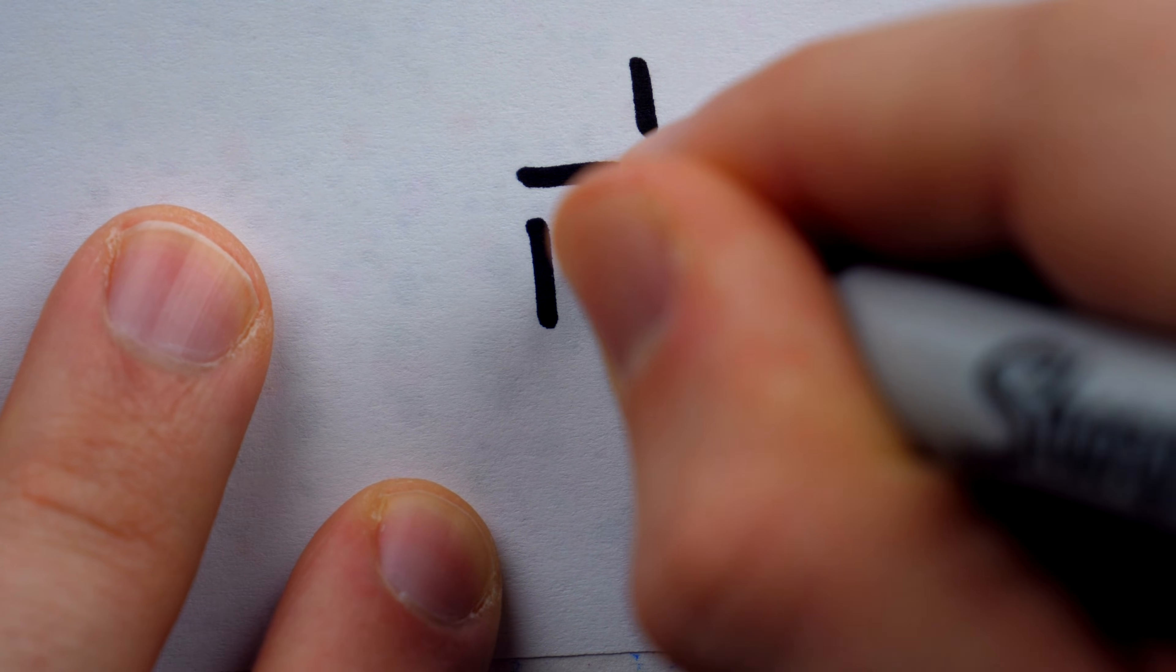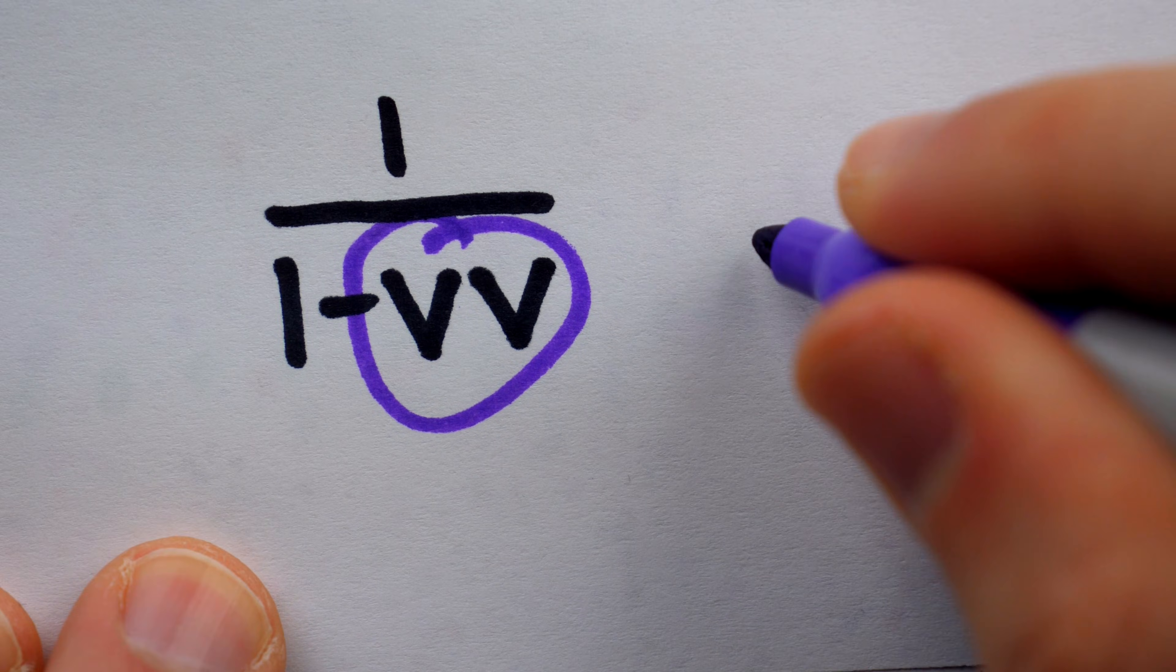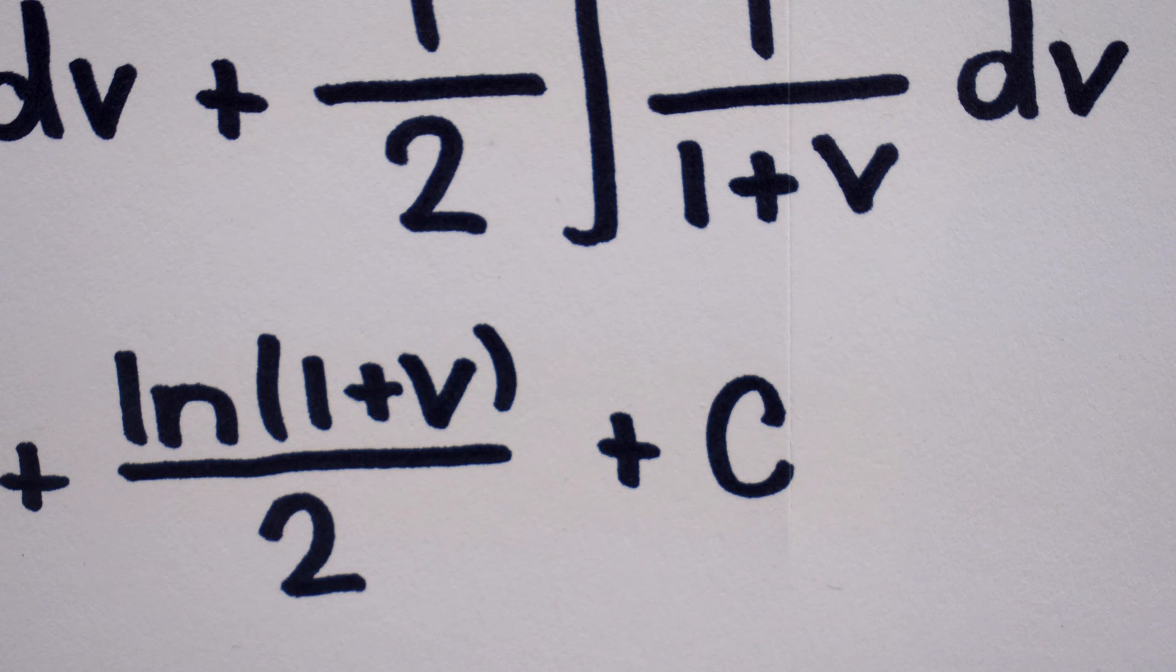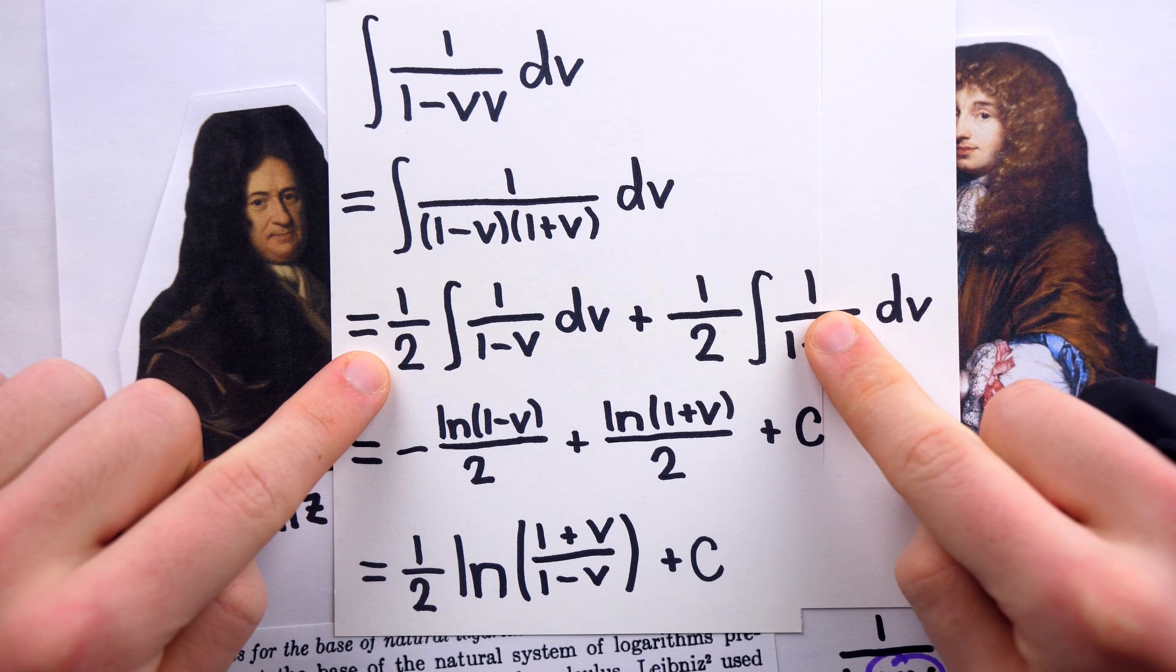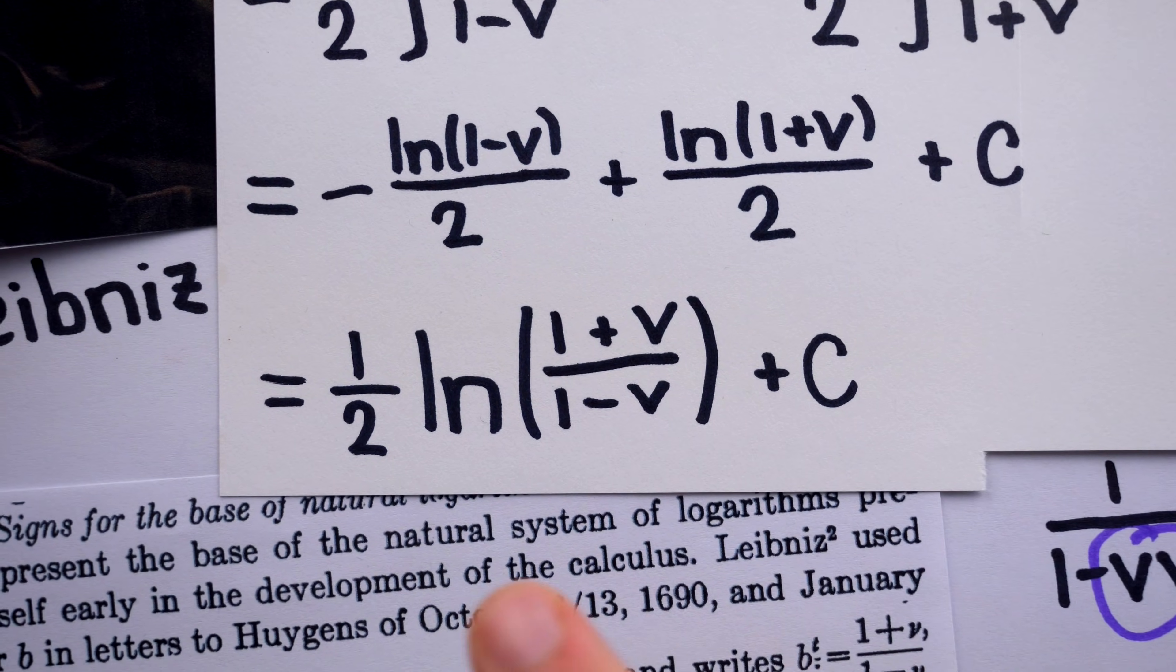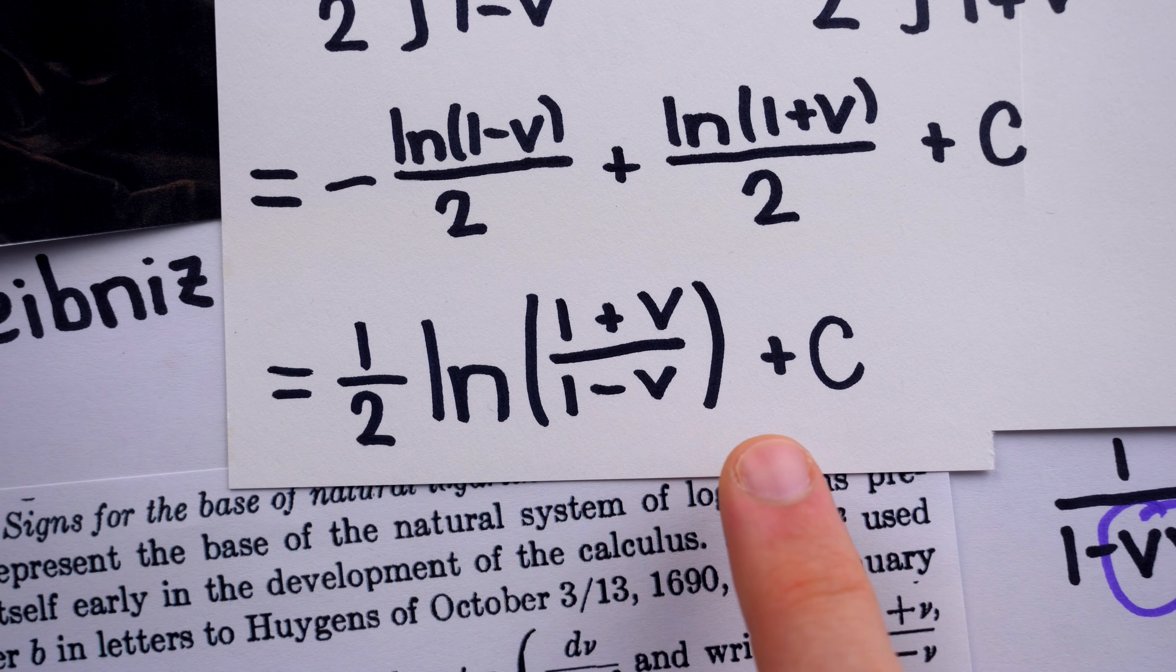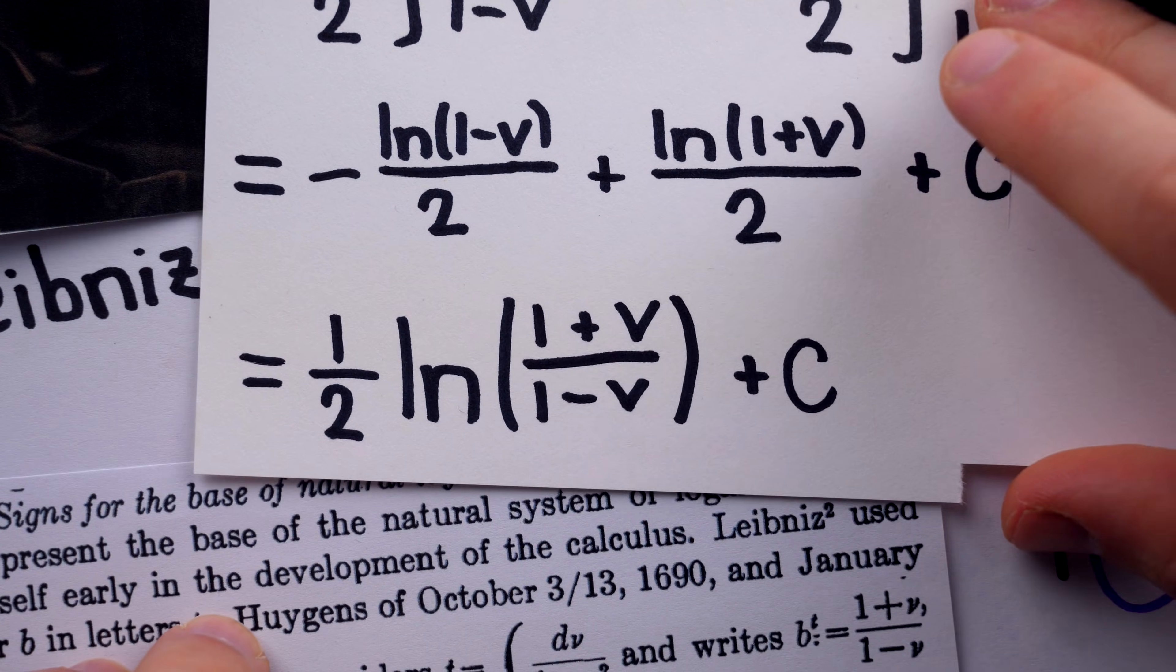However, Leibniz was not using it for v squared, so the integrand would have looked more like this. This manner of writing repeated multiplication still lingered for squared terms specifically. Now, the integral in question can be evaluated with fraction decomposition. In the end, it equals half the natural log of 1 plus v over 1 minus v plus the arbitrary constant. You might recognize this expression, but that's besides the point.